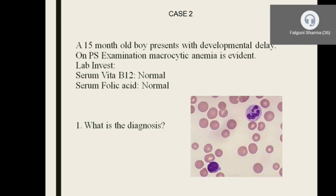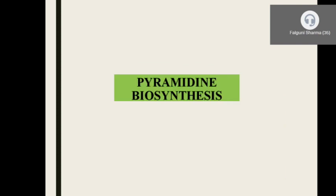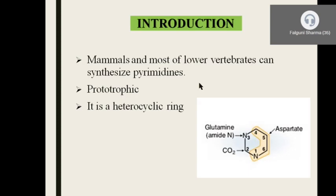Today's class covers pyrimidine biosynthesis and degradation. Unlike in purine, where we had nine different atoms from different contributors, the pyrimidine ring is simpler — a six-membered heterocyclic ring. Most animals and mammals can synthesize pyrimidines in the body, so we do not require them in the diet. We are prototrophs because we can synthesize them.